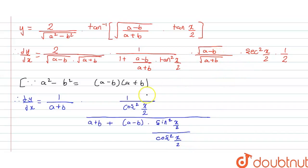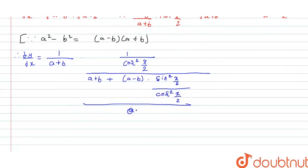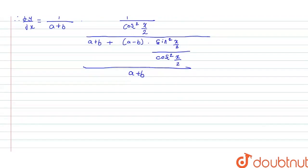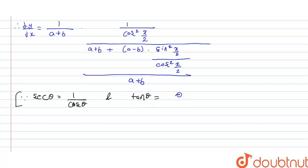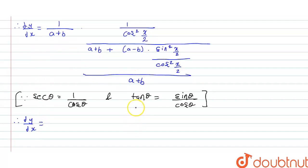Now remaining terms are cancelled. Over here in the denominator it will be a plus b plus a minus b, into — instead of tan square x by 2, written as sin square x by 2 upon cos square x by 2. This whole is upon a plus b, and this a plus b will get cancelled in the next step.